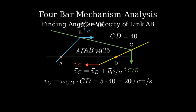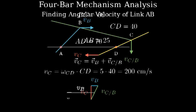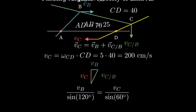We can solve using the velocity triangle. Let's draw the velocity triangle. Using the law of sines on the velocity triangle, V underscore B slash sin 120 degrees equals V underscore C slash sin 60 degrees. Since V underscore C equals 200 centimeters per second, we can solve for V underscore B.